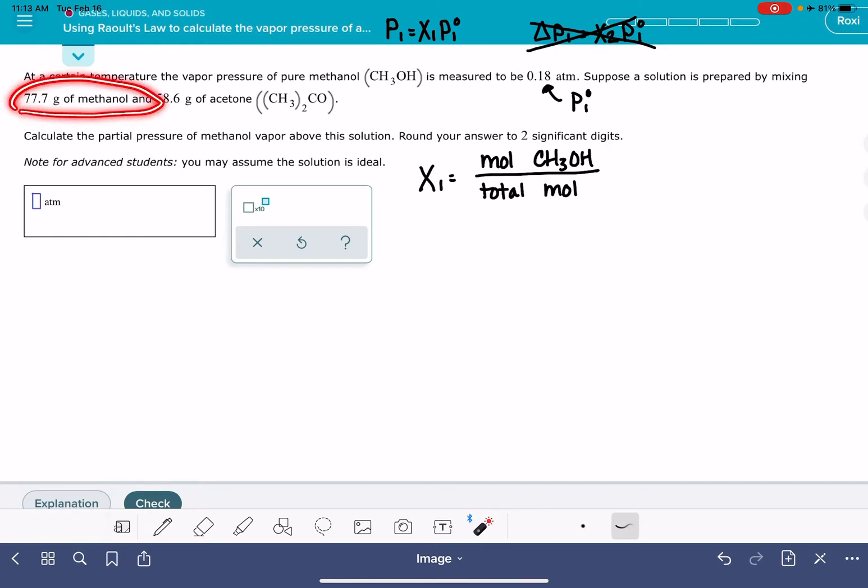We've got 77.7 grams of methanol. Let's start by getting that converted into moles. 77.7 grams of CH3OH. I looked up the molecular weight of methanol, and it is 32.04 grams per mole. So that means that we have 2.43 moles of methanol.